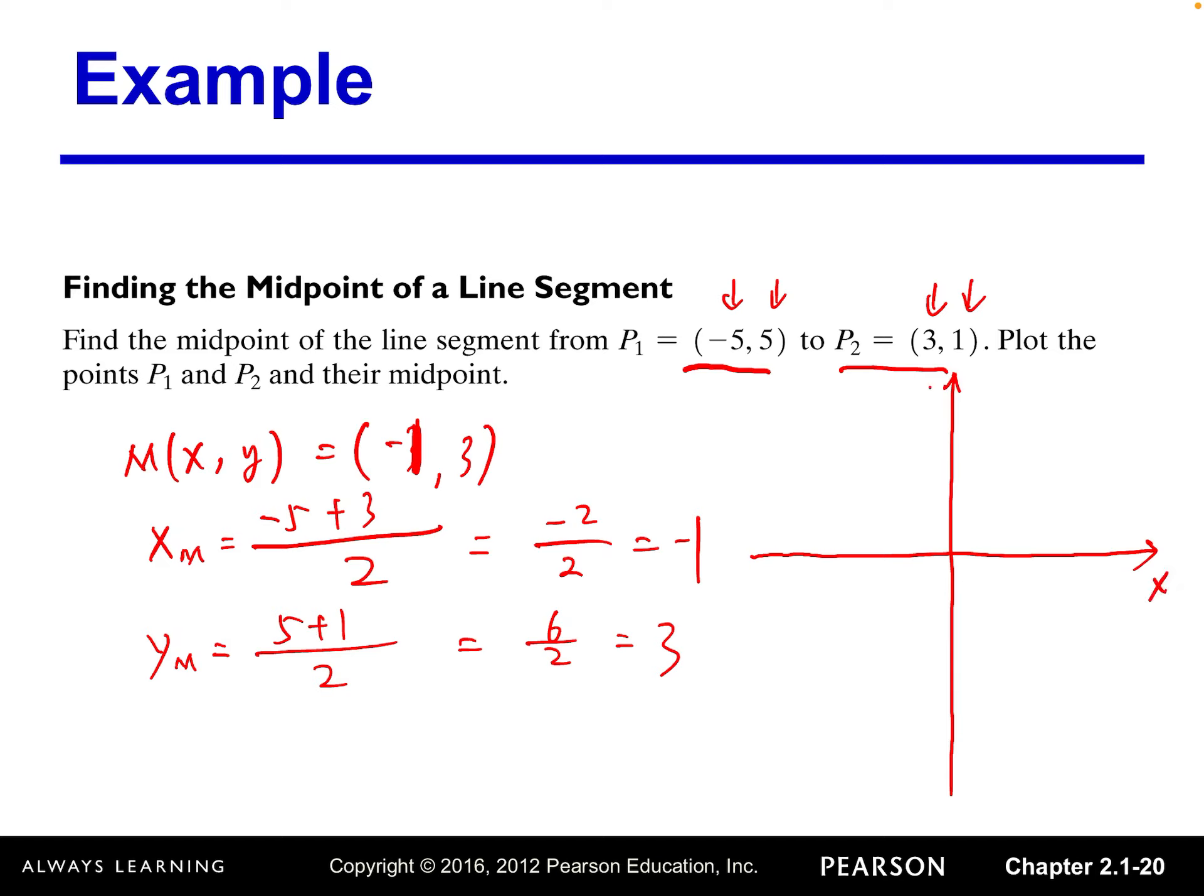Set up a rectangular coordinate system. The intercept is 0. And put a scale. That's 2, 3, 4, 5, 6.